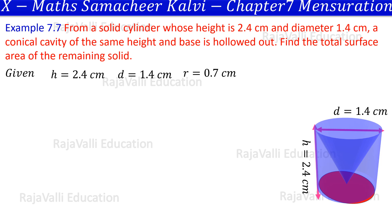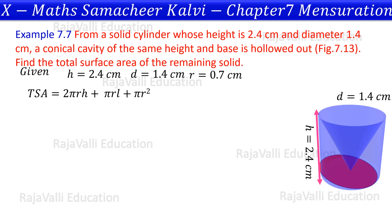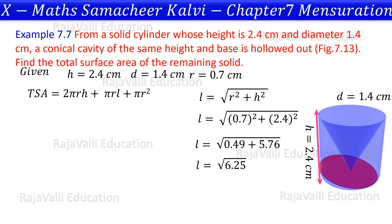To find the total surface area of the remaining solid, we use the formula involving 2πr. Since the slant height L value is needed, we use the formula L = √(R² + H²). Calculating this gives us L = 2.5 cm.